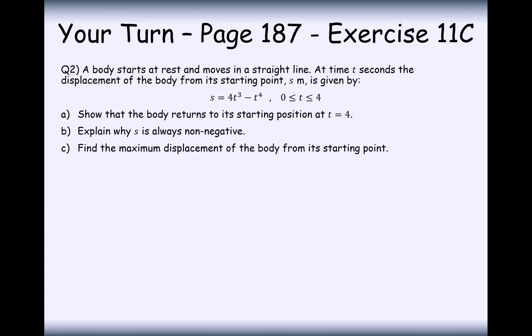Right then, well done for having a go at this question here then. So part A is show that the body returns to its starting position at t equals 4. So in this case here, we just need to substitute in t equals 4. So we'll get 4 to the power of 4, minus 4 to the power of 4, which will equal 0. So 0 displacement then, so that returns to the starting point.